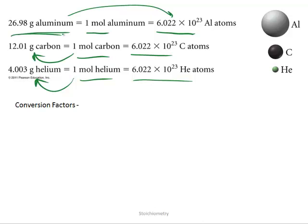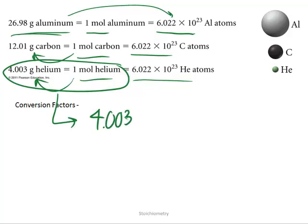So you can see that we have several equivalencies here: grams to moles, moles to atoms. So of course, if we have an equivalency, we can draw several conversion factors from that. So if you want to convert grams to moles, say for helium, you can always draw two conversion factors.